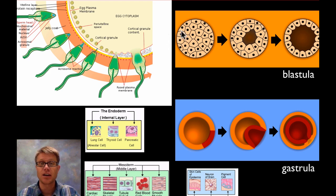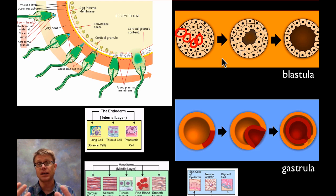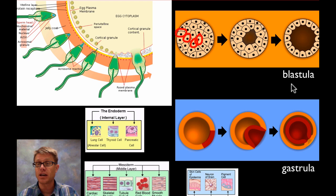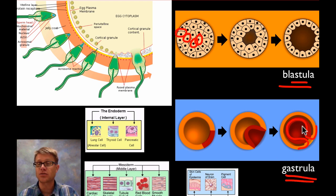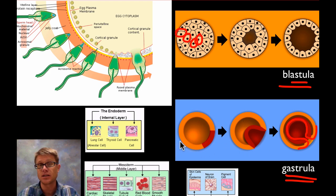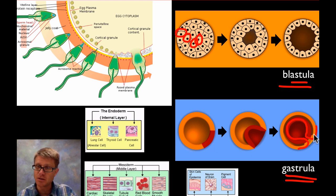That one fertilized cell, or zygote, is going to divide and divide and divide until we eventually have what's called a blastula — simply a ball of cells that have divided through mitosis, all of them identical. That blastula will fold in on the side and form something called a gastrula, which is just the formation of a hole on the side. In humans this gastrula is going to be implanted into the endometrium, into that uterine lining.